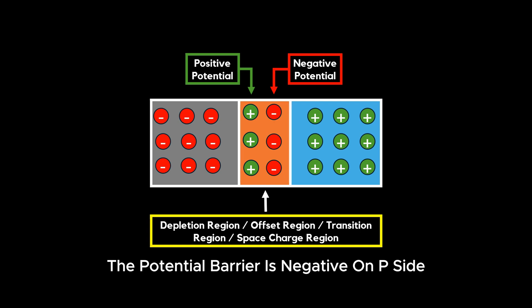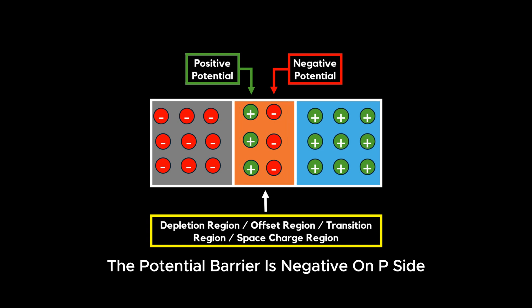The potential barrier is negative on the P-side and positive on the N-side, which restricts the recombination of electrons with holes.